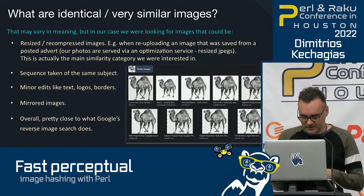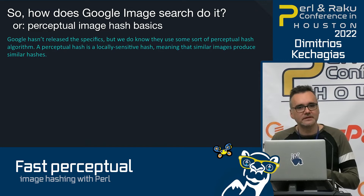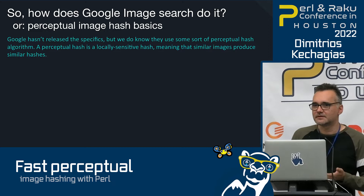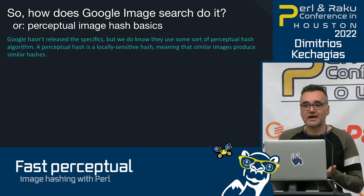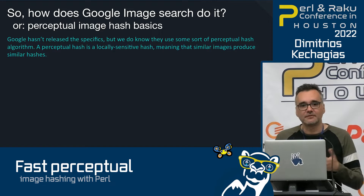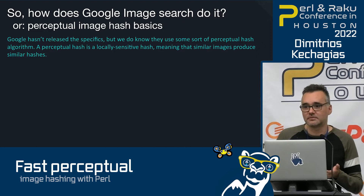Since I mentioned Google — how do they do it? Their algorithm isn't published, but we do know they use perceptual hashes. Perceptual hashes are locally sensitive hashes, which means that if you have similar images and pass them through a locally sensitive hashing scheme, you end up with similar hashes.